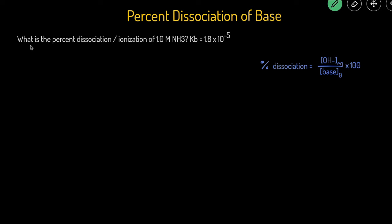This question reads, what is the percent dissociation or ionization of 1.0 molar NH3? We're also given that the Kb is equal to 1.8 times 10 to the negative 5.